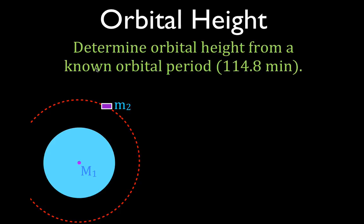We're going to use the idea that there was a force acting on Explorer 1, which I designated M2. There's a force on Explorer 1 from the Earth, and there's a force on the Earth from Explorer 1. Those two forces are equal in magnitude and opposite in direction. The force on Explorer 1, because it's traveling in a curved path, is a centripetal force. The force on the Earth is the gravitational force.